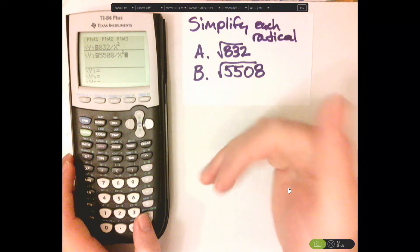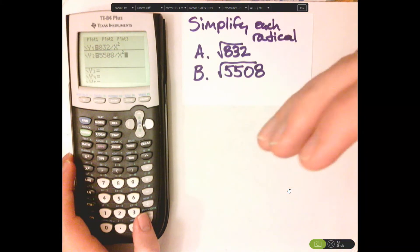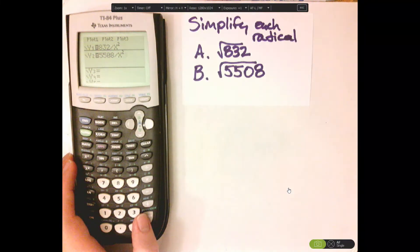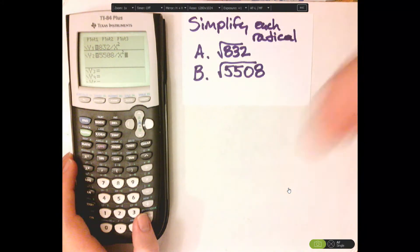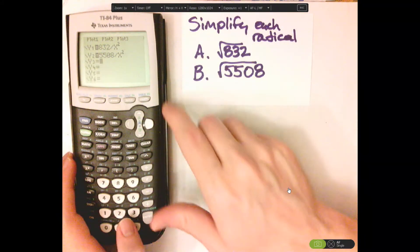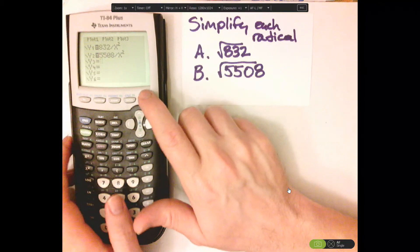Now what's going to happen is with the table feature, it does 1 squared, then it's going to see what that is, then 2 squared, 3 squared, etc. So second and then table.